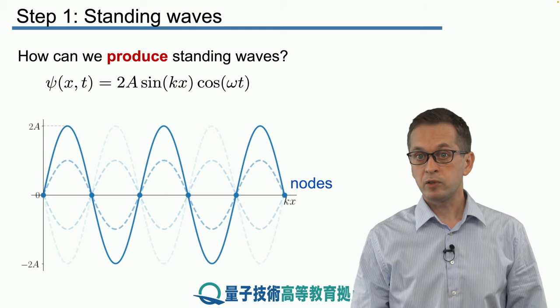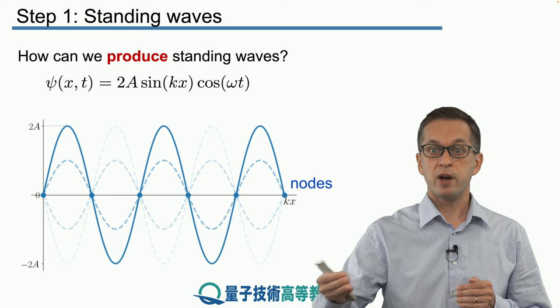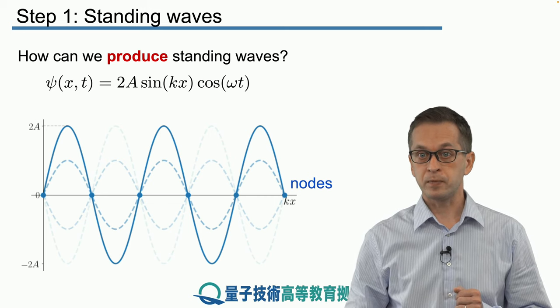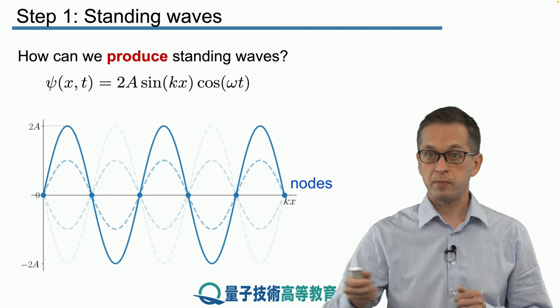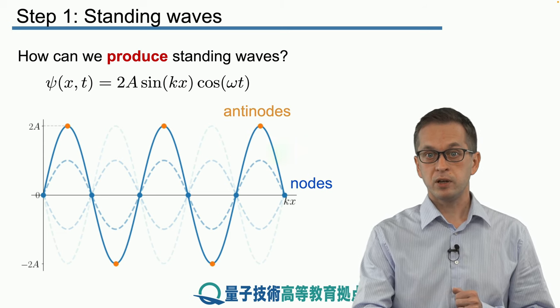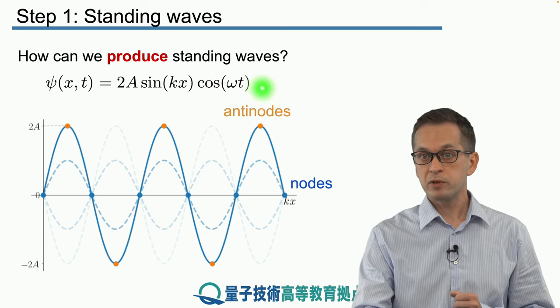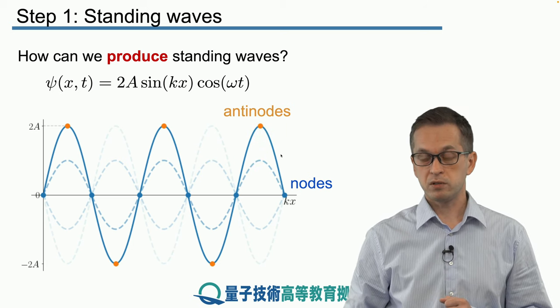On the other hand, there are those points which travel and reach the furthest away from the zero displacement. They reach the maximum amplitude. These are the orange points here. And because they are the opposite of nodes, we call them anti-nodes of the standing wave.